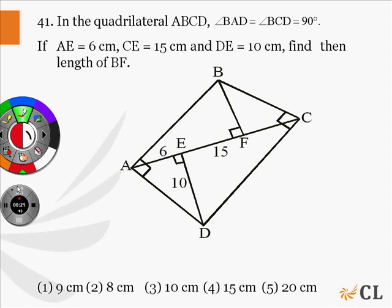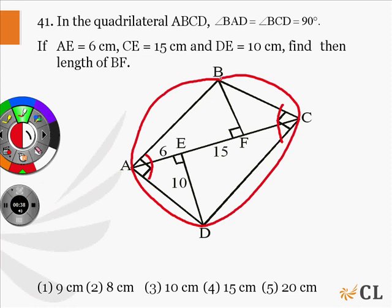Since angle BAD and angle BCD sum up to 180 degrees, ABCD is a cyclic quadrilateral, which means a circle can be drawn passing through the points A, B, C, and D.